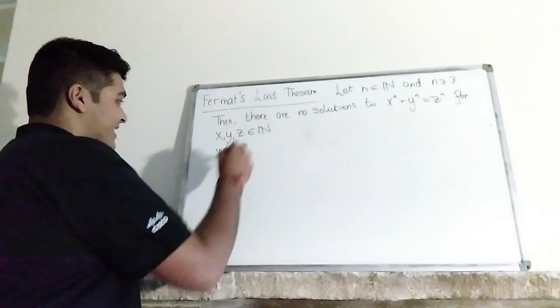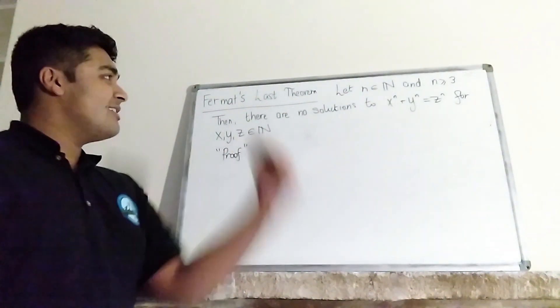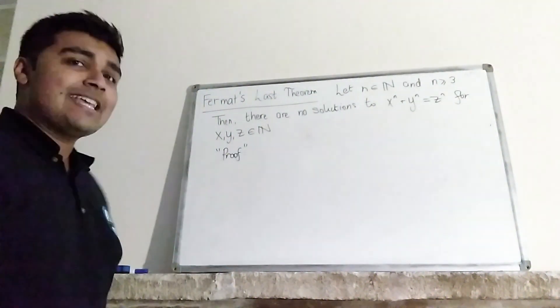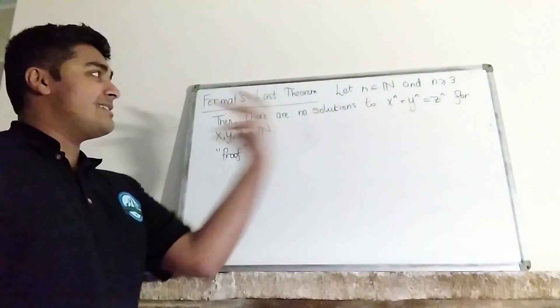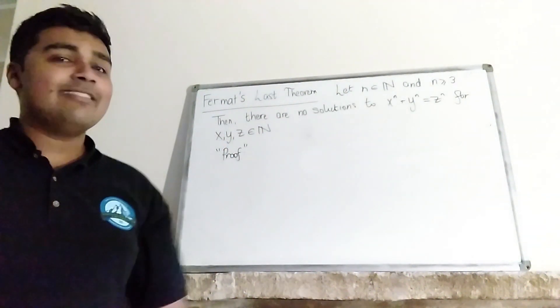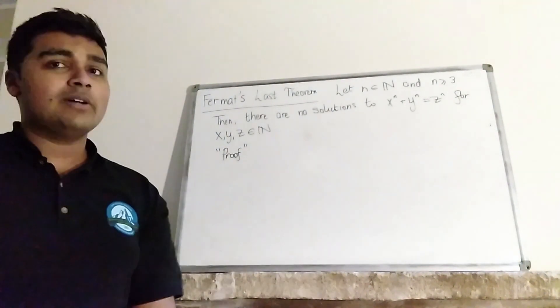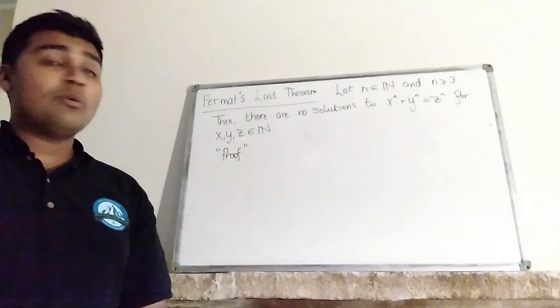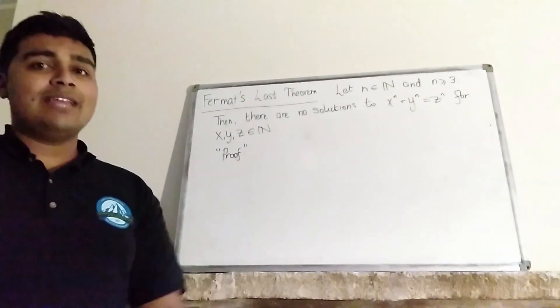So suppose there exists an n with this property. In other words, there exists an n for which there are solutions x, y, and z in the natural numbers to x^n + y^n = z^n. And now what we're going to do is take the smallest n with this property.